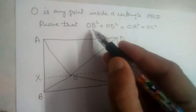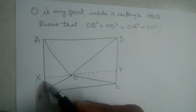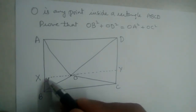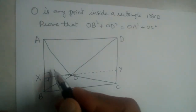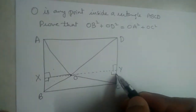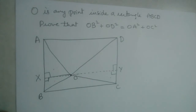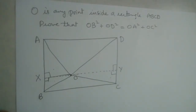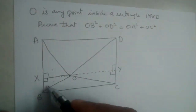Now, OB is the hypotenuse in this triangle because this angle is 90 degrees. How many right angle triangles are there? One, two, three, four — four right angle triangles. So the trick is: apply Pythagorean theorem as many times as there are right angle triangles.